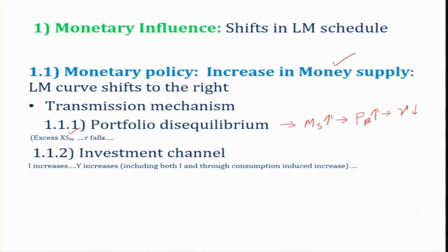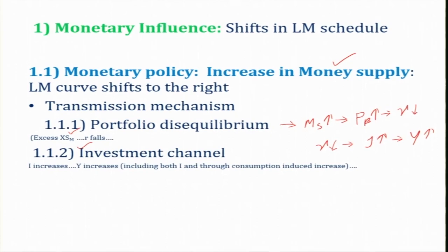When the rate of interest decreases, using the second channel — the investment channel — investment will be increasing. When investment is increasing, saving must also increase, and due to the increase in investment, income is going to increase. That means a decrease in rate of interest leads to an increase in Y. Y increases through both channels: one is increase in investment demand — demand by firms for capital goods — and another is that the household sector also demands more durable goods due to the declining rate of interest.